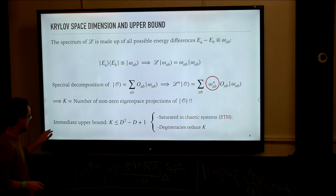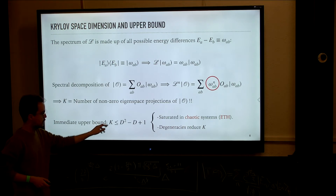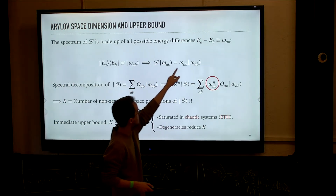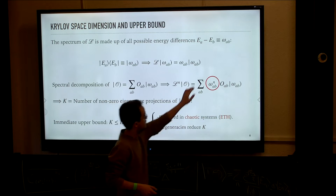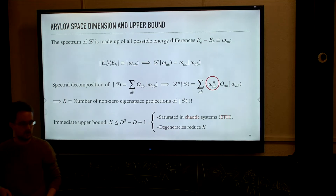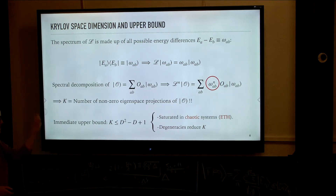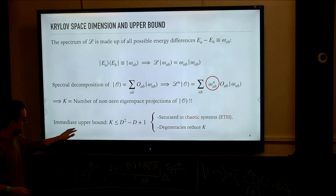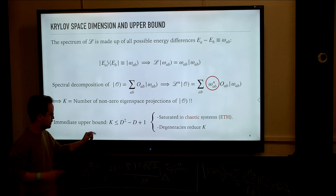This immediately gives an upper bound for the Krylov dimension which is smaller than d squared. Because the eigenvalues of the Liouvillian are energy differences, whenever two indices are the same we have an identically zero eigenvalue, so the zero eigenspace is at least d-fold degenerate. Therefore, the contribution of the zero eigenspace only contributes one dimension to Krylov space, giving an upper bound of d squared minus d minus 1.